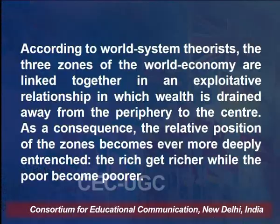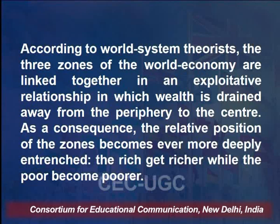According to world systems theorists, the three zones of the world economy are linked in an exploitative relationship in which wealth is drained away from the periphery to the centre. As a consequence, the relative position of the zones becomes even more deeply entrenched — the rich get richer while the poor become poorer. This is a question that economists around the world are trying to explore, and the condition is more or less the same both within countries and across states.